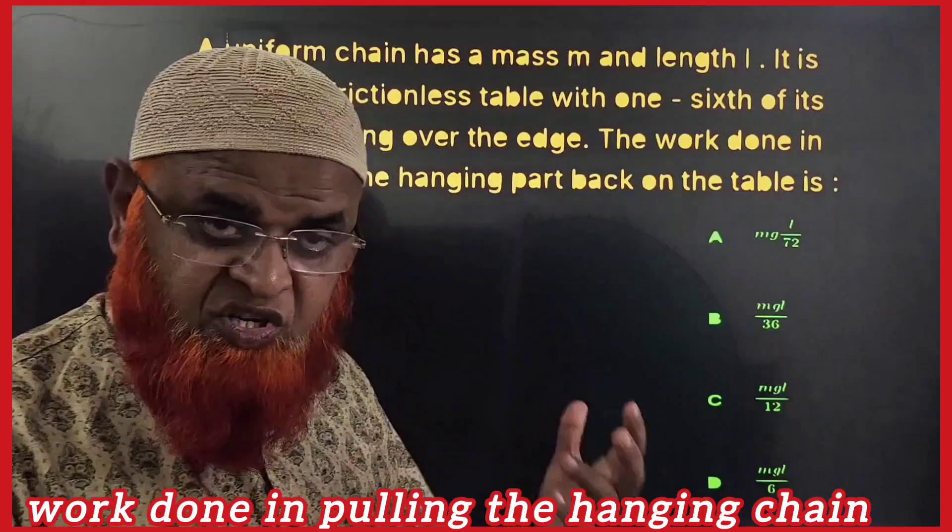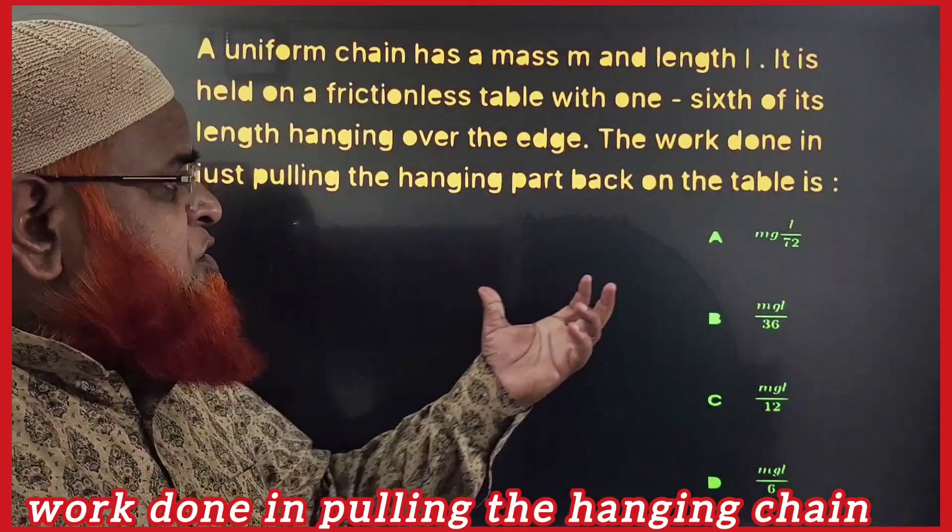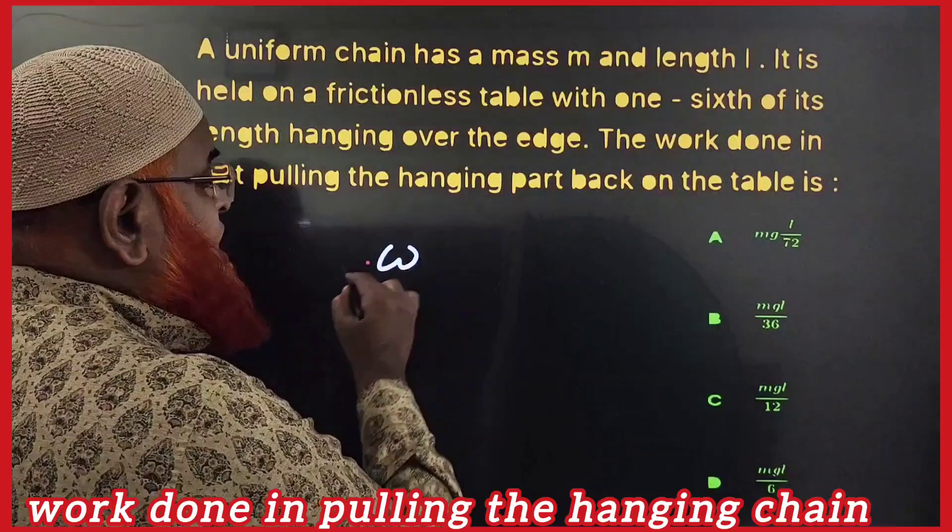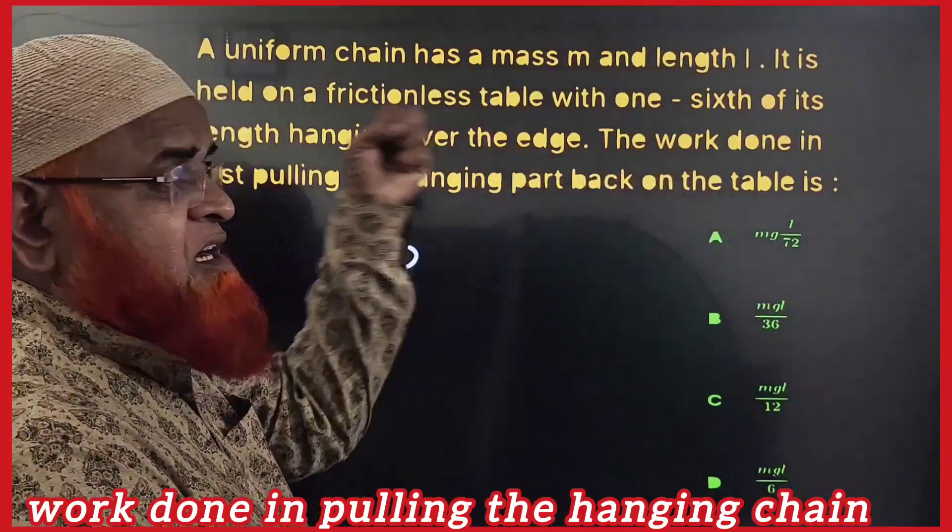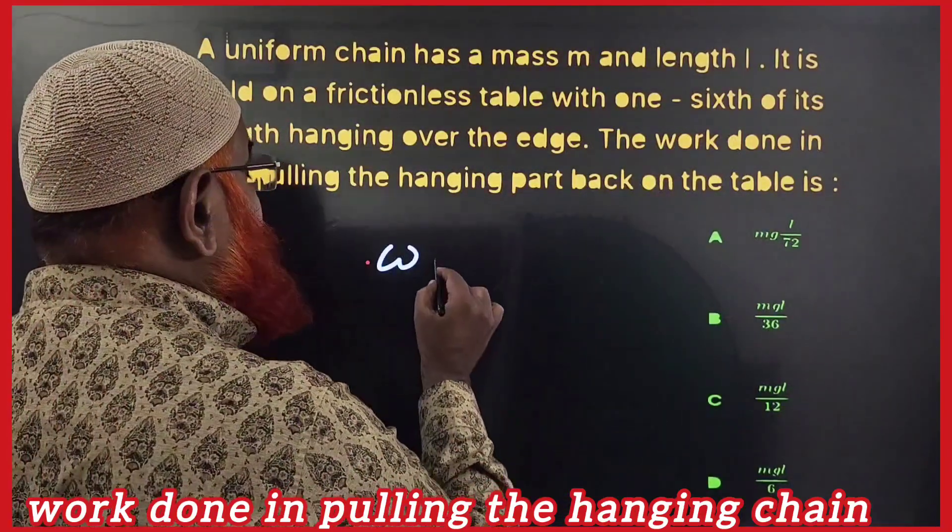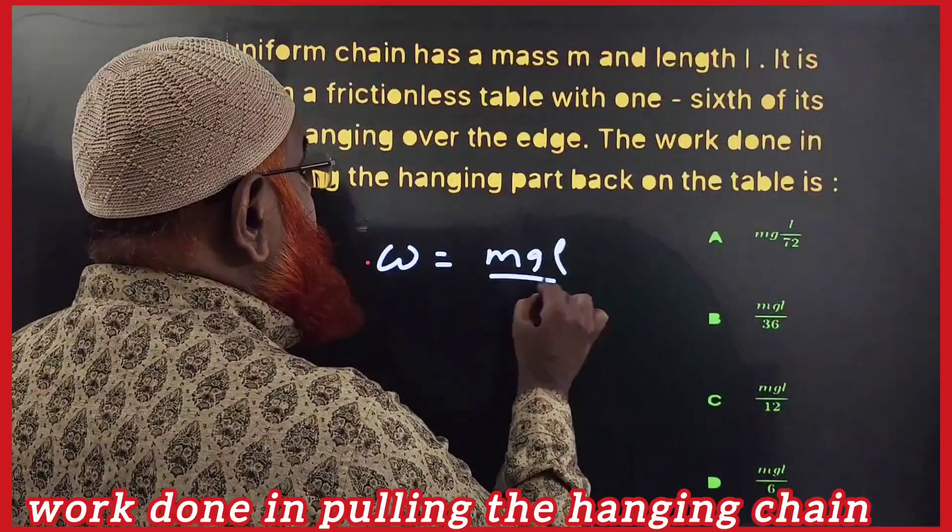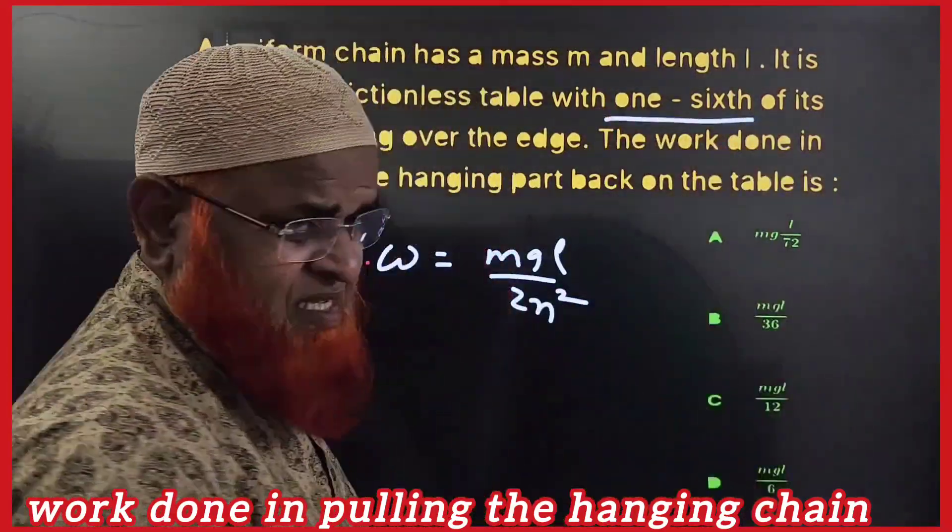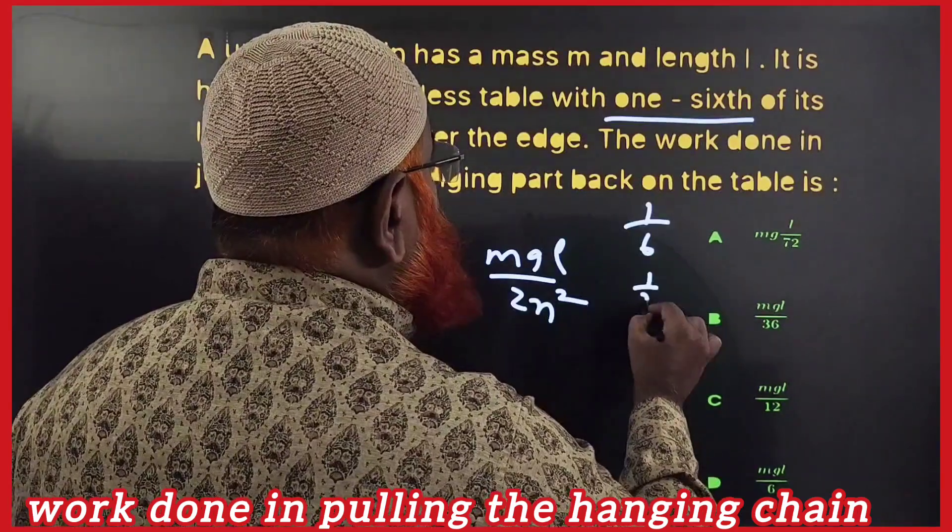Let us solve the problems related to the chain hanging. Now you all know that the formula for pulling the chain, the work done to pull the chain on the table, is MGL by 2N squared. Here N means 1/6, so in the place of N we'll be getting 6.